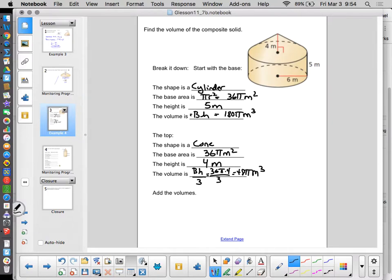We then go ahead and find our total volume by adding these together in this case. So, 180 pi plus 48 is 228 pi cubic meters is my total volume. So again, just break it down. I mean, it can look overwhelming to begin with, but it's really not that bad, because we just break it down into smaller shapes.